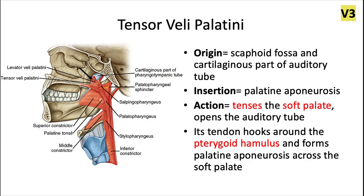Next we have the tensor velli palatine, and this is a really important muscle that definitely appears on the board exam all the time. This one's an exception — it's innervated by cranial nerve V3. It originates from the scaphoid fossa and the cartilaginous part of the auditory tube. It inserts into the palatine aponeurosis, and the action — as the name suggests — is to tense the soft palate. It's also responsible for opening the auditory tube to equalize air pressure between the middle ear and the nasopharynx.